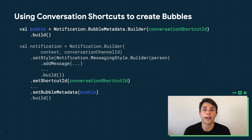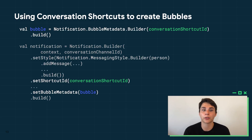Bubbles are constructed by adding the bubble metadata to the notification. You can define a separate intent for this or just reuse the intent from your conversation shortcut. In this case, we're defining the intent by referring to the conversation shortcut ID and creating a notification which both refers to that shortcut and uses the bubble metadata we've just defined.